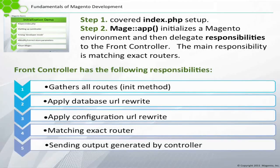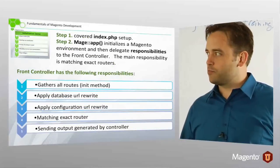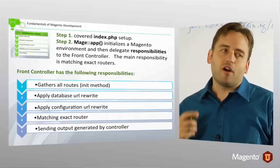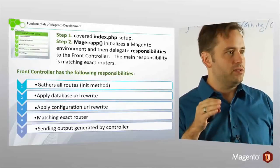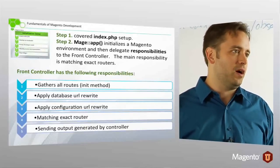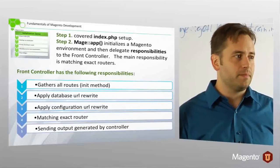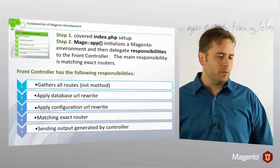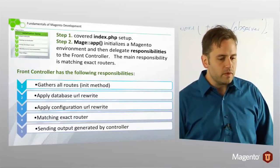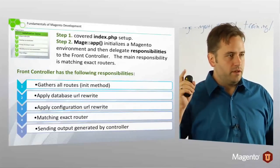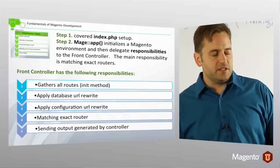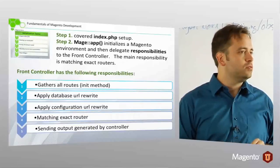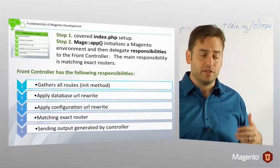Well, the front controller has five areas of responsibility. It gathers routes via its init method, apply database URL rewrites. So, these are the rewrites that are built into the database when you make a category, when you make a product. Now, these paths are stored in the database with some additional information. And Magento will inspect the current path against the database to see if it needs to translate to an actual internal path.